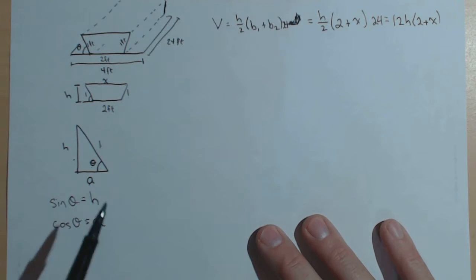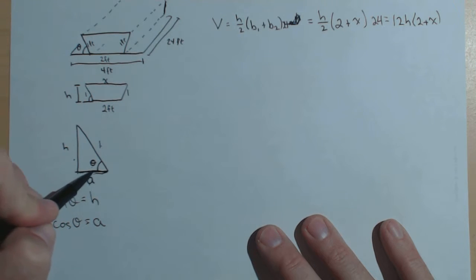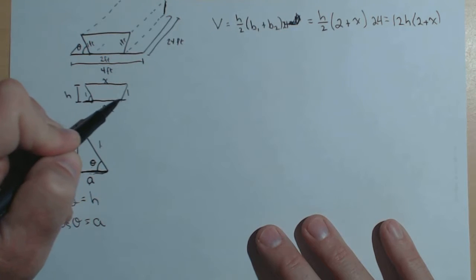Now again, we know how h fits into our function. Let's talk about how a does. Well, notice what a is. A is that piece right here. It's underneath the fold. So this is a, and this is a.